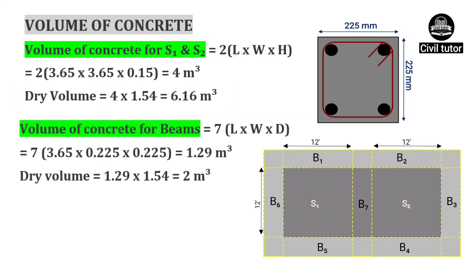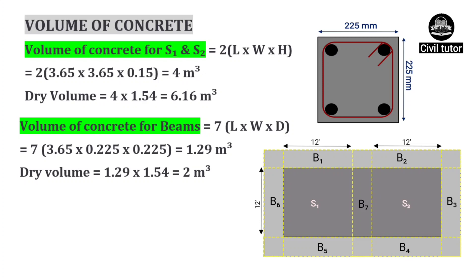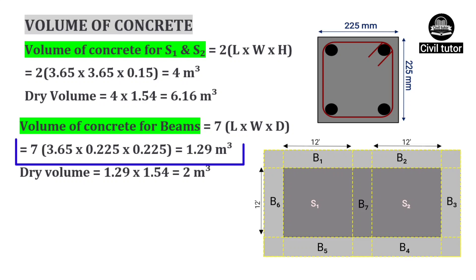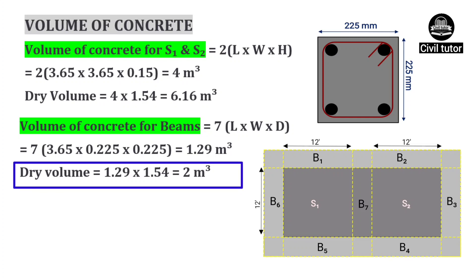Now we need to calculate the volume of concrete for beams. Since we have 7 beams, the volume of 7 beams will be equal to 7 times length into width into depth of each beam. As the length of beam is 3.65 meters, its width and depth are equal to 0.225 meters each. So on substituting these values, volume of concrete for beams will be equal to 1.29 cubic meters. Converting to dry volume: 1.29 × 1.54 gives a total of 2 cubic meters.